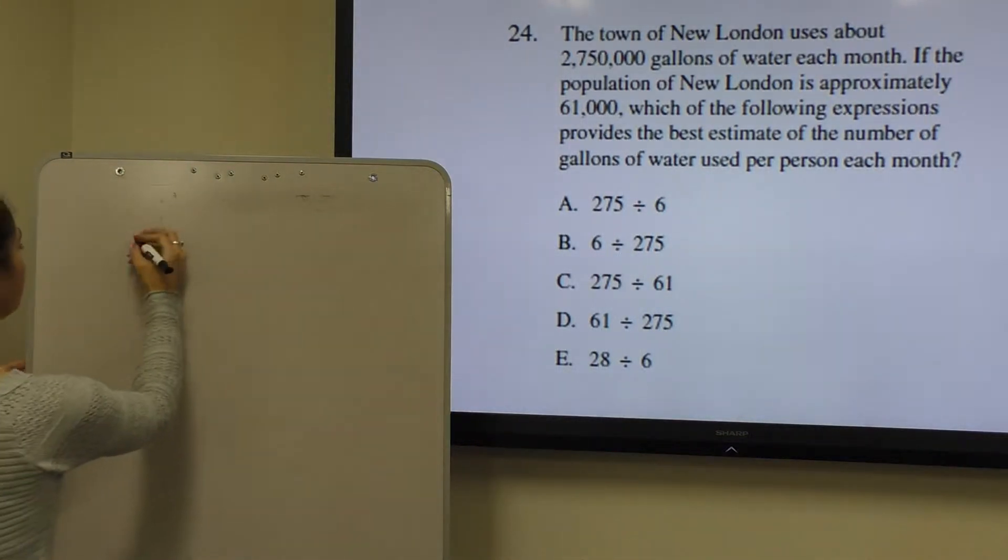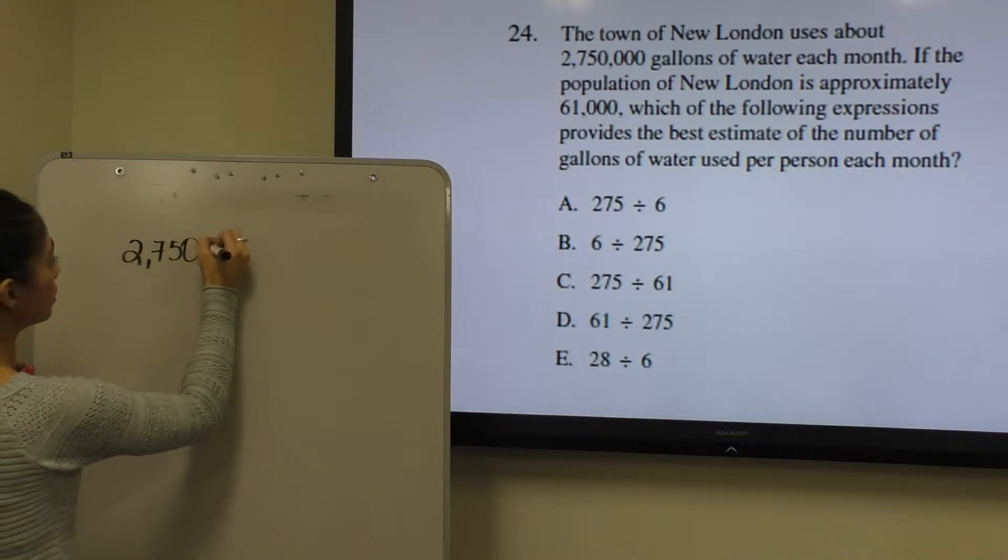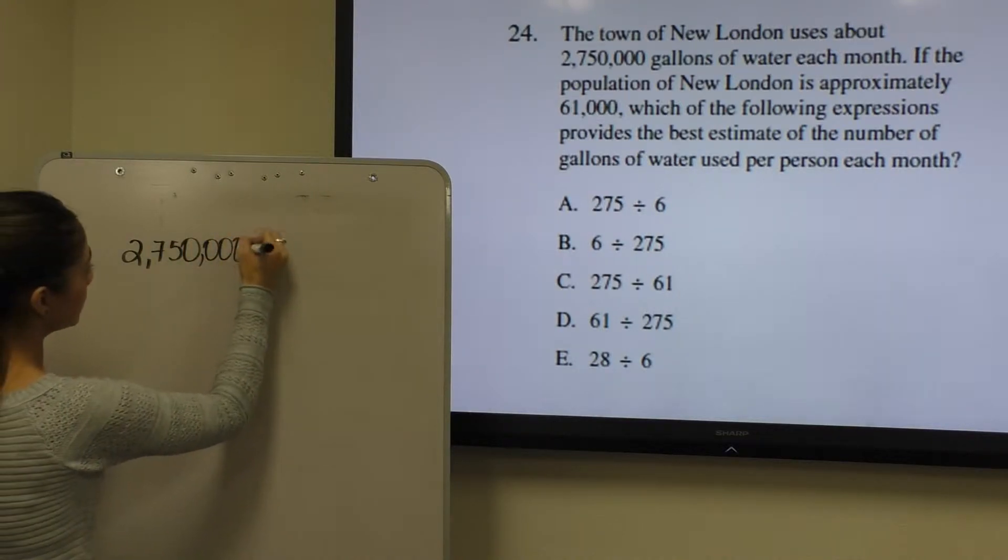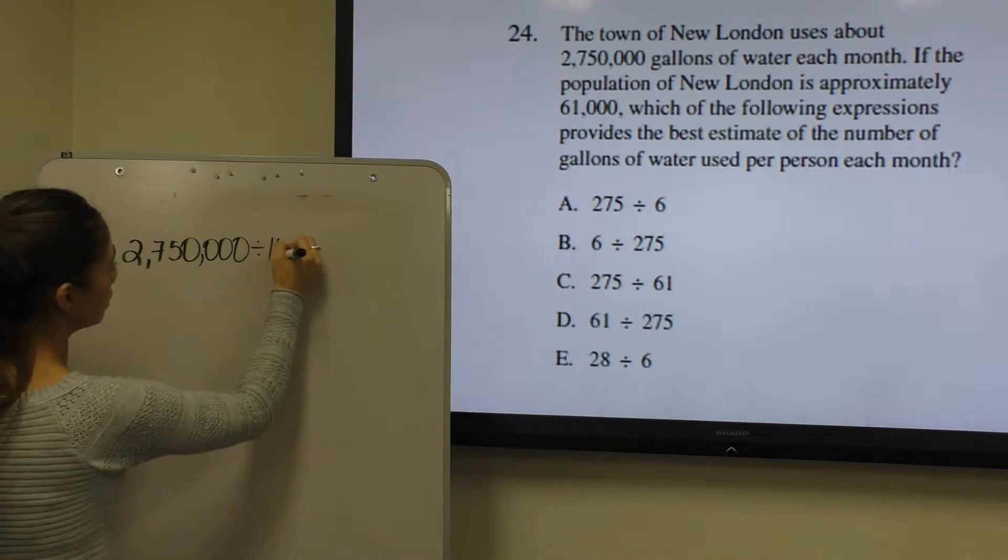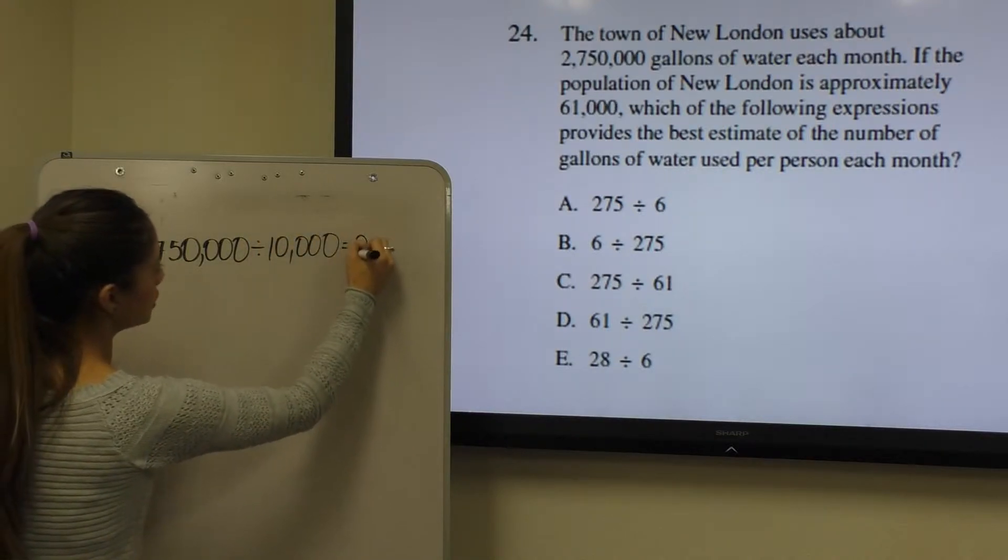In this case, they divided 2,750,000 by 10,000 in order to get 275.